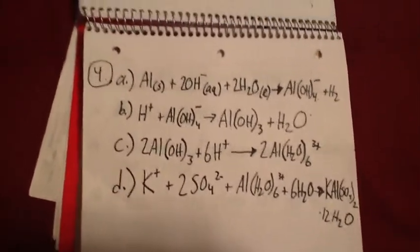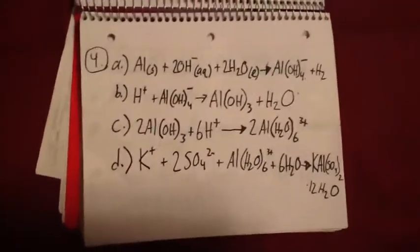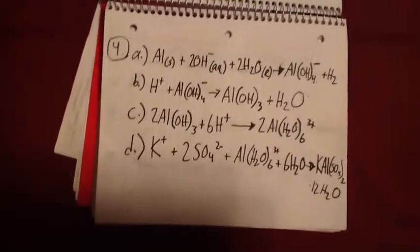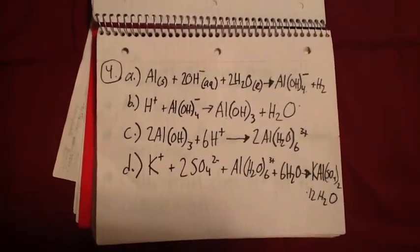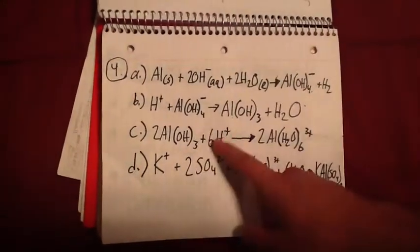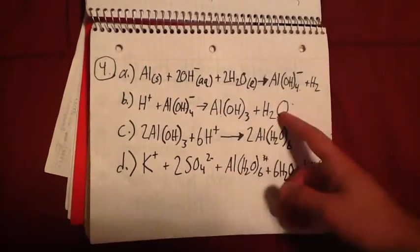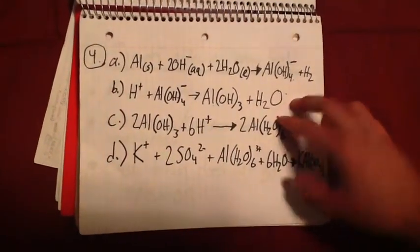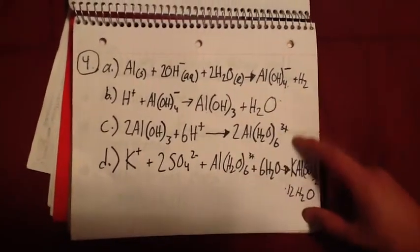Next equation we were asked to write was between hydrogen ion and AlOH4, where this yielded aluminum hydroxide shown here. A pretty simple equation yields water as a result of this reaction, and these go to completion also.